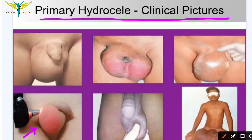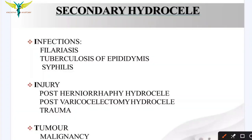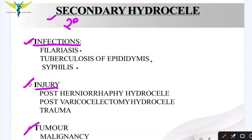In secondary hydrocele, it is mainly caused by infections such as filariasis, TB of the epididymis, or syphilis; by injuries like post-hernioraphy hydrocele (after hernia surgery), post-varicocelectomy hydrocele, and trauma; and in tumors, hydrocele is mainly seen after malignancy.